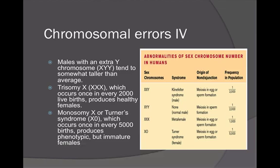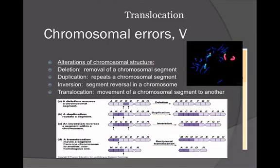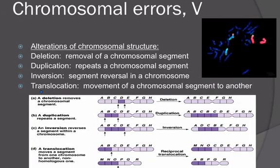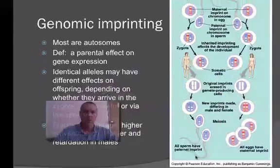Another error that may occur is actually within the chromosomes themselves, where part of one chromosome segregates incorrectly. There are several cases: deletion, where a segment like D is lost; duplication, where B and C are recopied; inversion, where a segment flips; and translocation, where a segment actually moves from one chromosome to another. All of these are alterations of the chromosome that would have a genetic effect.